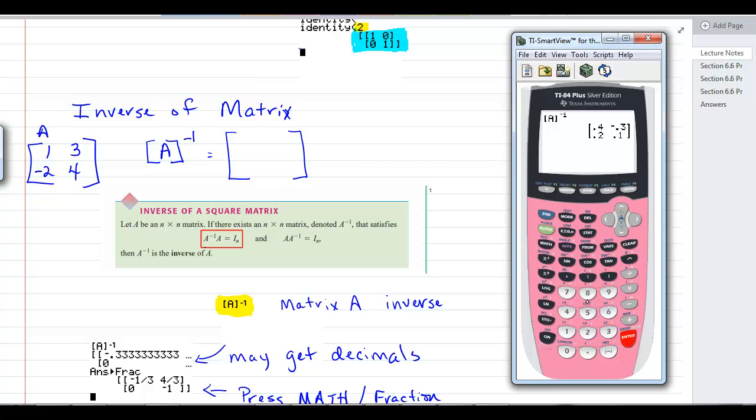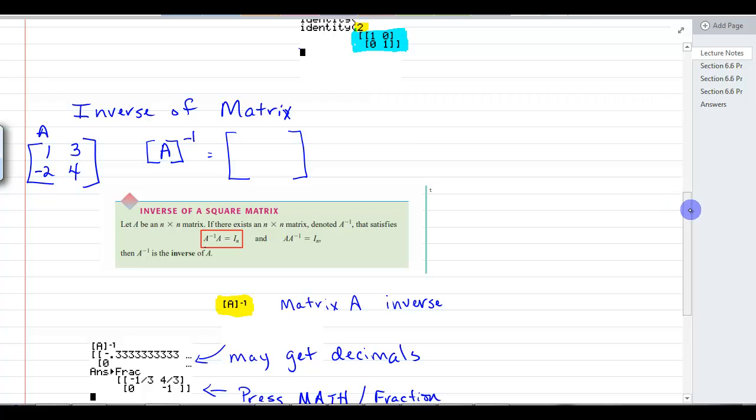And we'll hit enter. And you should get .4, negative .3, .2, .1. So those would be the matrix, the inverse of that. Now let's try something. Let's multiply that by the original and see if we get the identity. So we're going to hit multiply that answer multiplied by second matrix A. Enter. And what did we get? We got the identity matrix. So a regular one times its inverse will give you the identity.